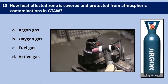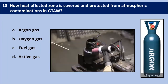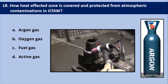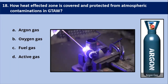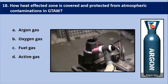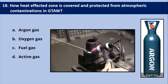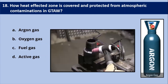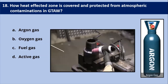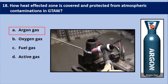Next question: how is the heat-affected zone covered and protected from atmospheric contamination in GTAW? Argon gas is used to protect the molten pool of metal against atmospheric elements including oxygen, nitrogen, and hydrogen. Argon also plays an important role in maintaining arc stability and gives a better weld appearance.